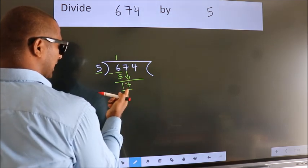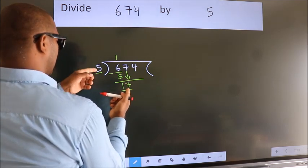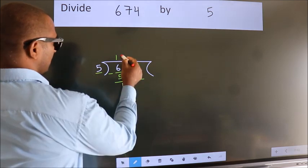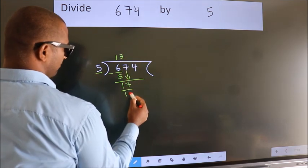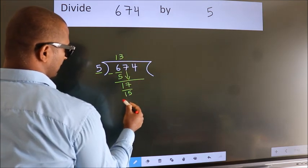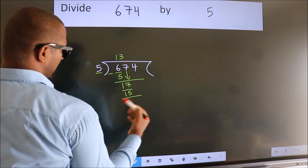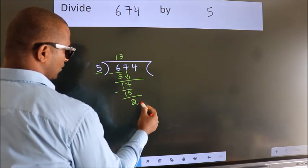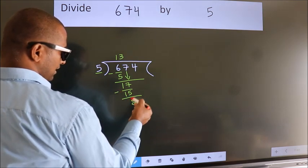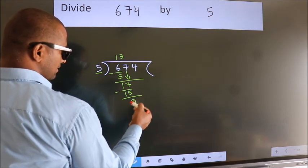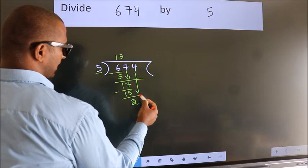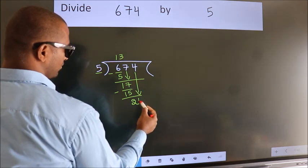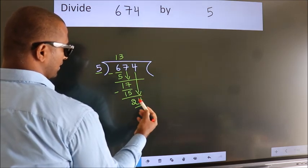A number close to 17 in the 5 times table is 5 threes 15. Now we subtract. We get 2. After this, bring down the beside number, so 4 down. So 24.